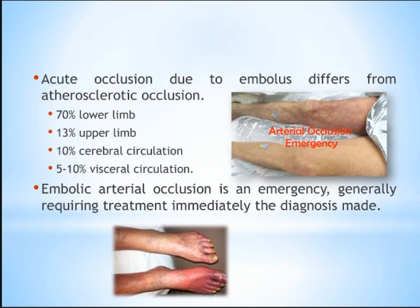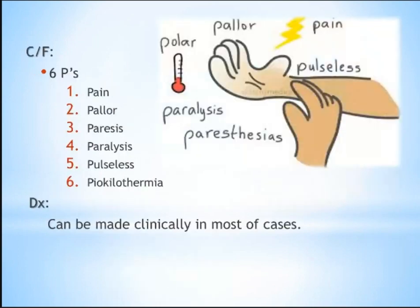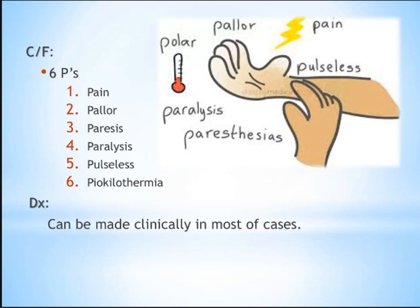Embolus of the artery requires immediate diagnosis and immediate treatment. Remember the six Ps — as you remember your name. Diagnosis depends on the clinical picture; there is no need for routine investigations because there is limited time — six hours for the upper limb and four hours for the lower limb. When the patient comes to hospital delayed, there should be immediate intervention.